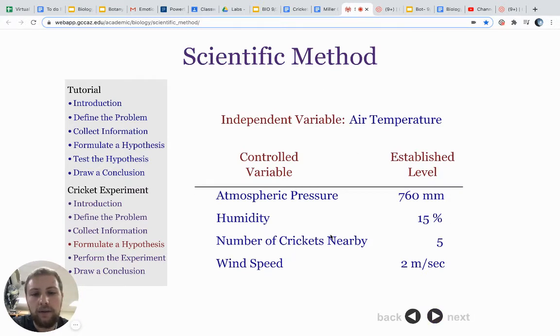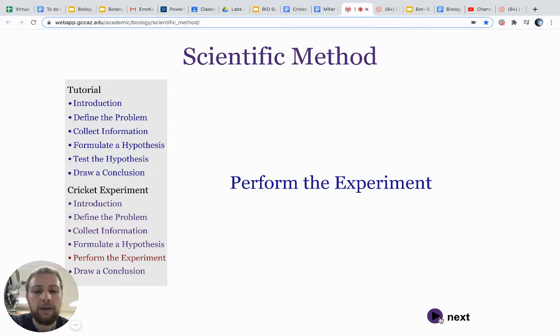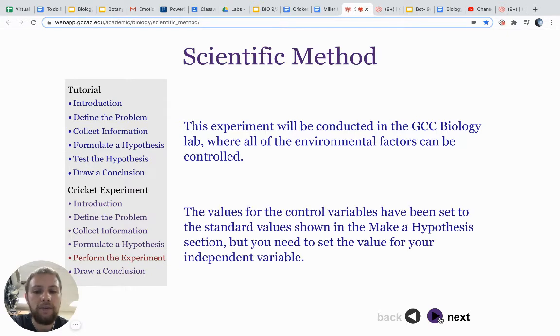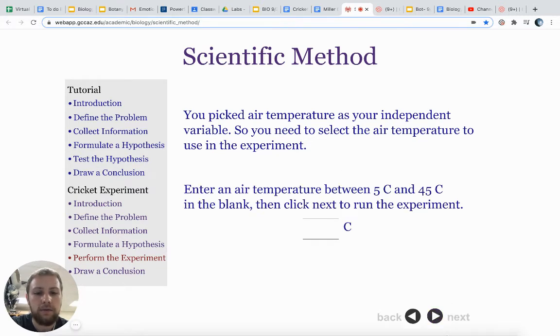This is essentially what values they are held at throughout the experiment. Now that you have established your hypothesis and know your controlled variables, click next to proceed with the experiment. This experiment will be conducted in the GCC biology lab where all of the environmental factors can be controlled. The values for the control variables have been set to the standard values, but you need to set the value for your independent variable. So we need to set a temperature value.